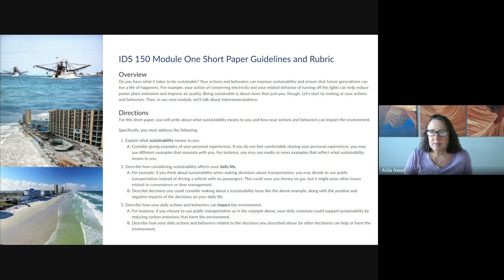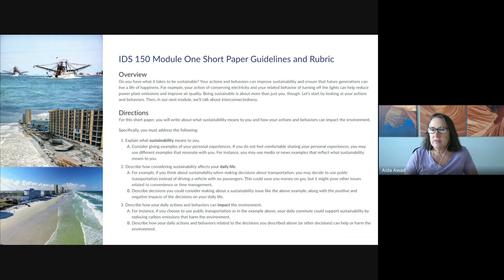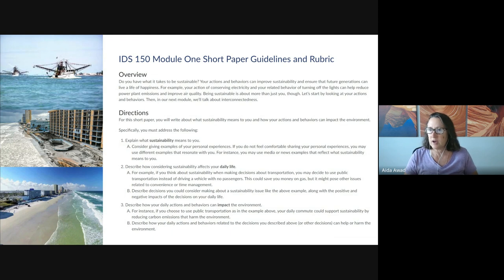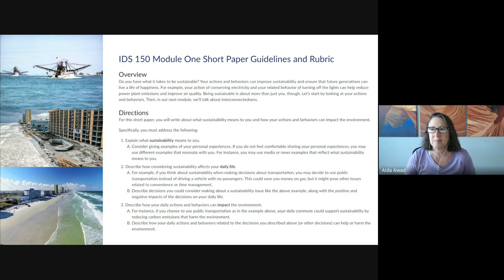First, you're asked to explain what sustainability means to you through examples from your personal experience or examples that resonate with you. I actually live in the northeastern part of Florida, and one of the sustainability issues here is over-harvesting of shrimp. I go down to the beach and I see these huge shrimp boats with their nets extended, like you see in that top picture. Shrimp over-harvesting has impacts on all three of the pillars of sustainability.